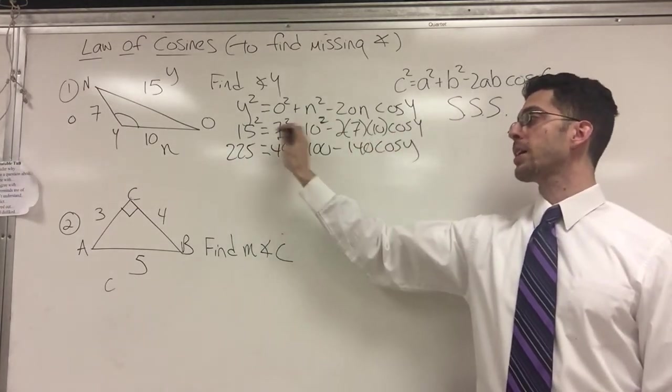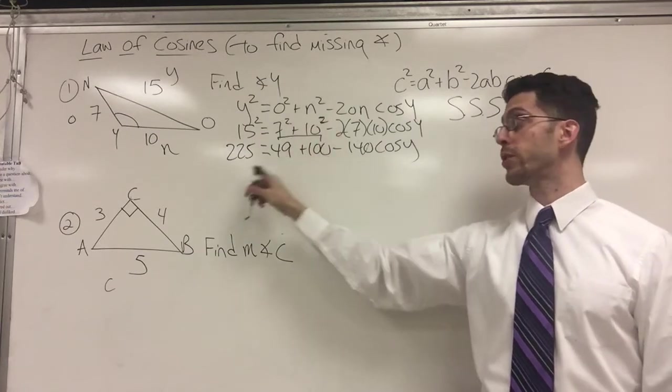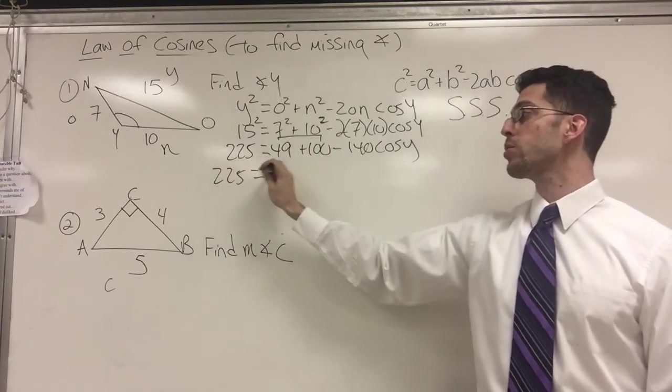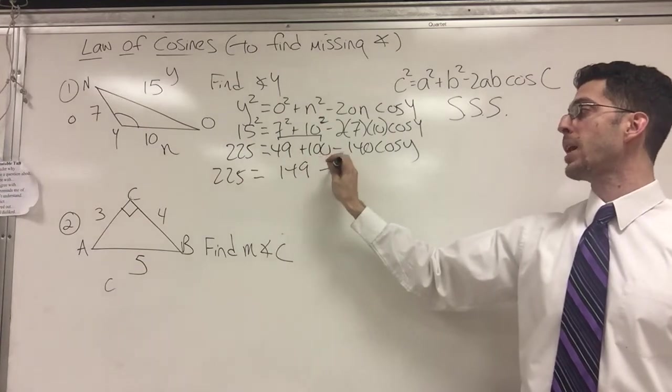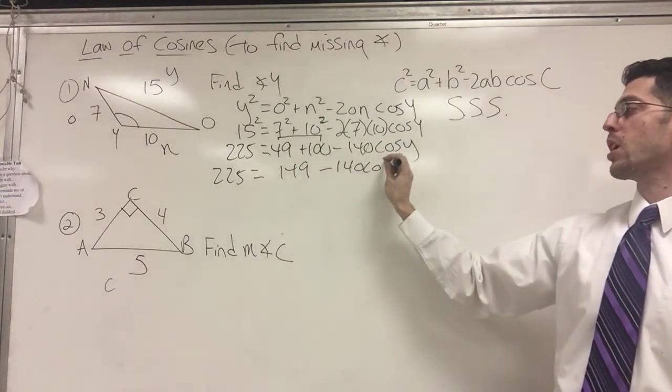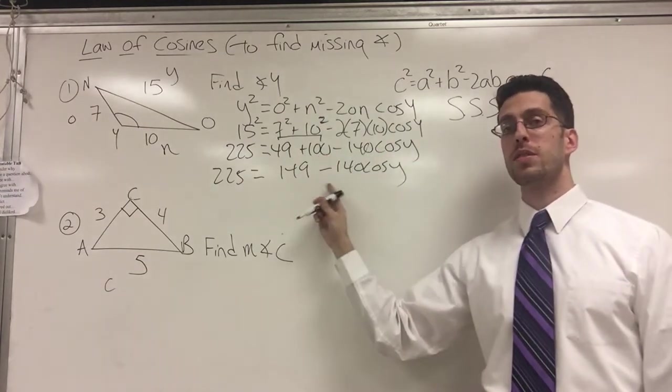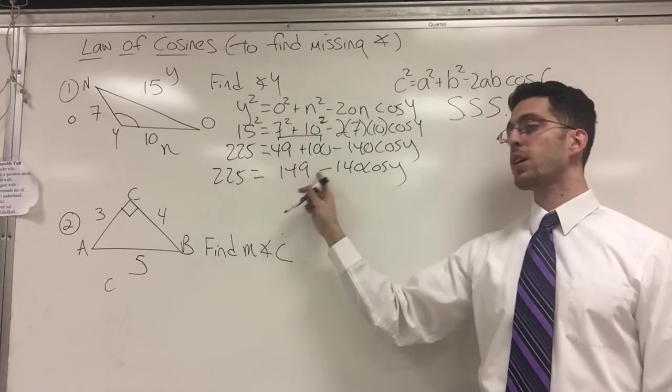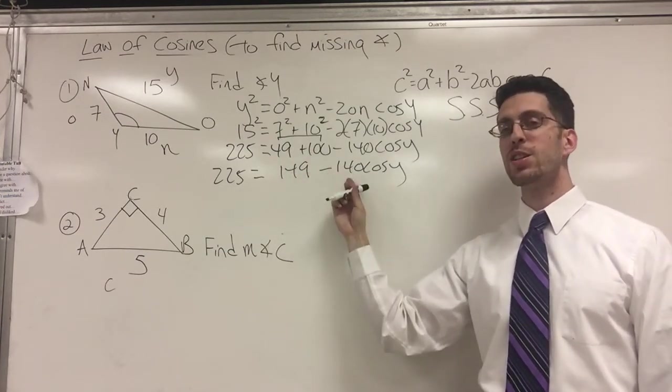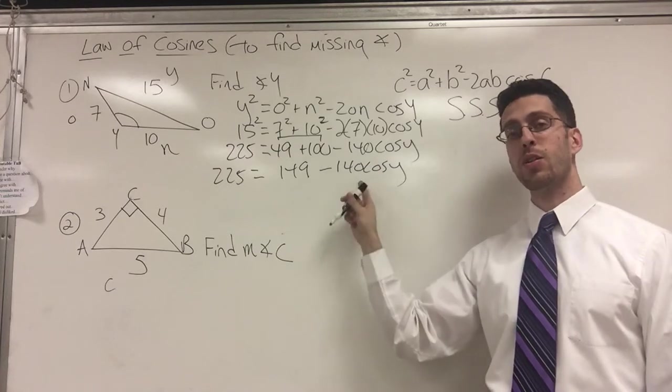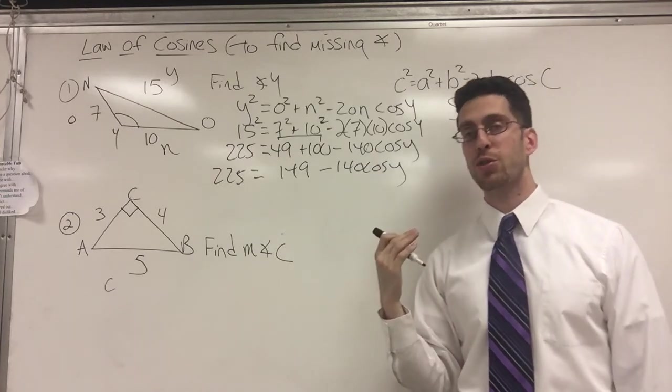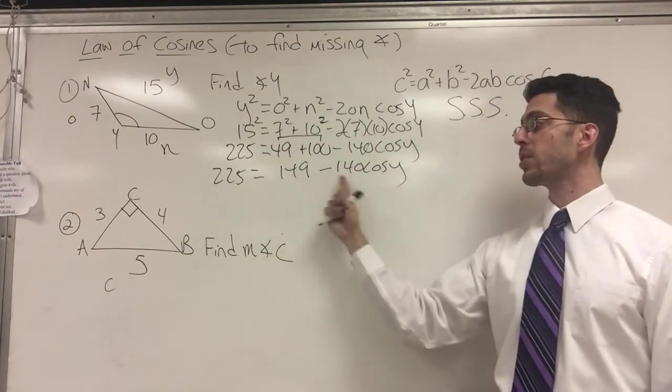Now I'm going to combine my like terms. I got 49 plus 100. So 225 equals 149 minus 140 cosine Y. Here's a rookie mistake. These people see 149 minus 140 and they do it. And they say, oh, the answer is nine cosine Y. And that's not true.